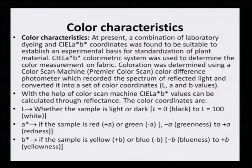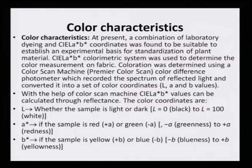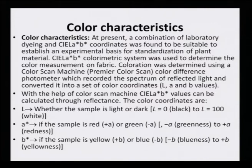At present, the combination of laboratory dyeing and C-LAB coordinates was found to be suitable to establish an experimental basis for standardization of plant material. The C-LAB colorimetric system was used to determine color measurements on dyed fabric. Coloration was determined using a color scan machine — in our case, we use the Premier Color Scan. This is a color difference photometer which records the spectrum of reflected light and converts it to a set of color coordinates, i.e., LAB values. C-LAB values can be evaluated through reflectance — when a light is shown, what is reflected.